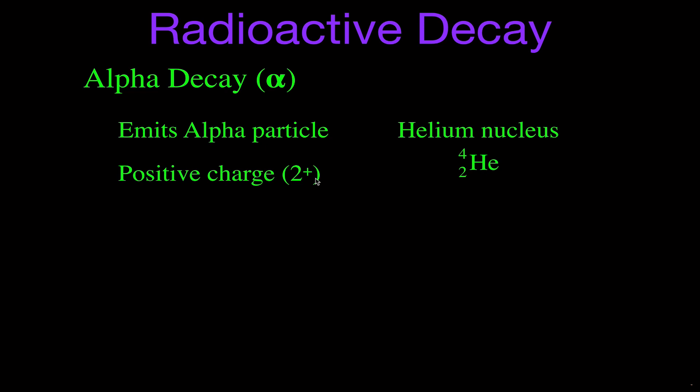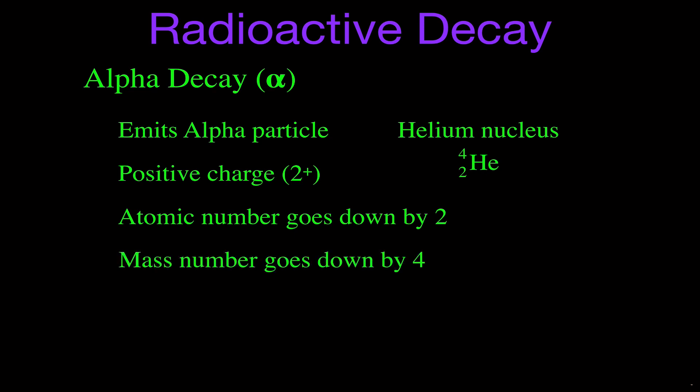The alpha particle has a positive two charge because it has two positively charged protons and two neutral neutrons. When an atom undergoes alpha decay, the atomic number goes down by two because it's emitting two protons, and the mass number goes down by four because it's emitting a total of two protons and two neutrons — both nucleons. We call it a transmutation because it's changing from one element to another.